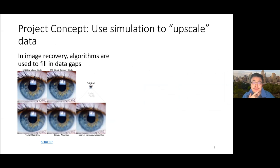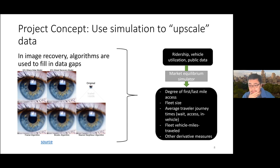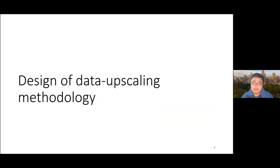Our concept is to make use of simulation to upscale the scenario data. As illustrated on the left-hand side, upscaling is like starting with a poor quality image and using algorithms to synthesize a higher quality image. We do that similarly for transportation planning — developing scenarios for these forecast models. We can use available data for ridership and vehicle utilization, inform a market equilibrium simulator, and output more detailed performance measures in terms of degree of first-last mile access, fleet size, journey times, and so on.